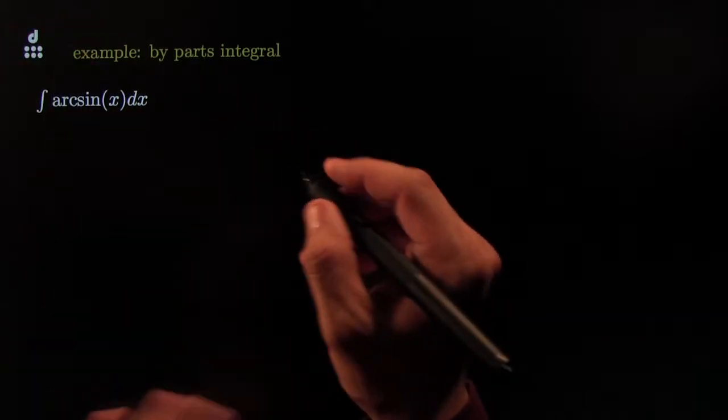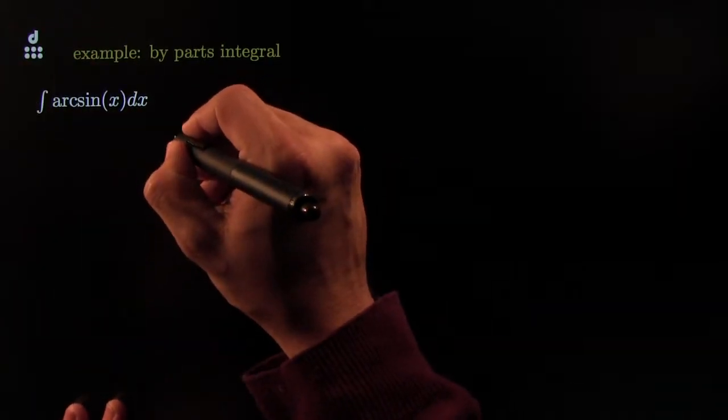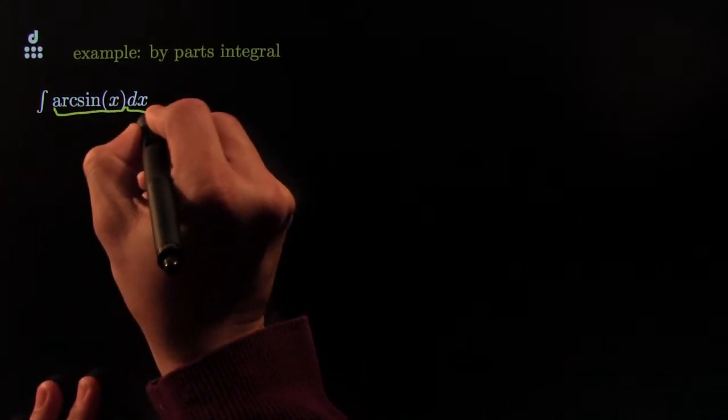So today we're doing the anti-derivative of arcsine. We're going to try a method called by-parts. By-parts goes like this: you've got to split this up into two pieces.